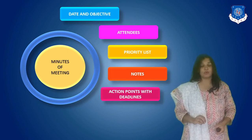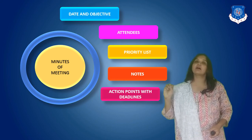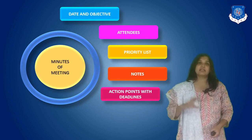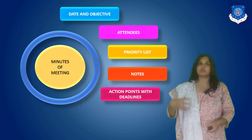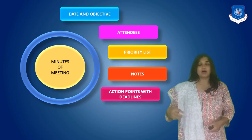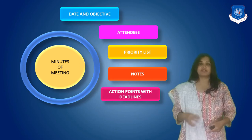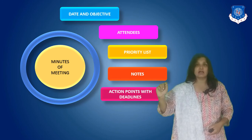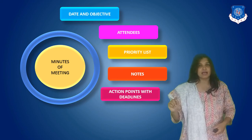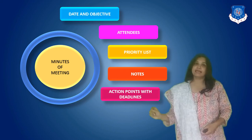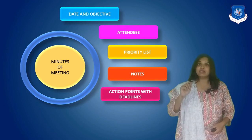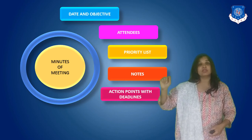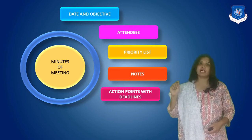Next, write down the action points and their deadlines. Whenever any meeting takes place it is very obvious that there will be some future action points which the participants arrive at — like after a few days you need to do this or complete this particular task. List down all the tasks or action points decided in the meeting along with their deadlines, and also write down the name of the person who will be responsible for each task.